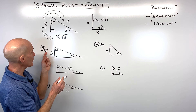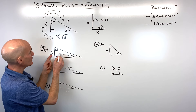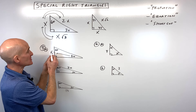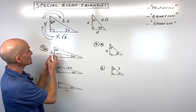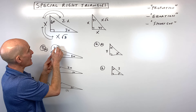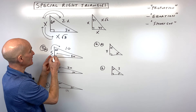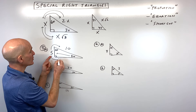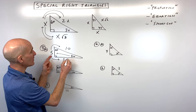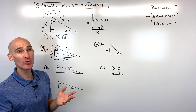For letter A, we're given the side across from the 30-degree angle — the short leg, which is 5. To get the hypotenuse, we just double it: that's 10. And we multiply by square root of 3 to get the longer leg: 5 square root of 3. Super quick.